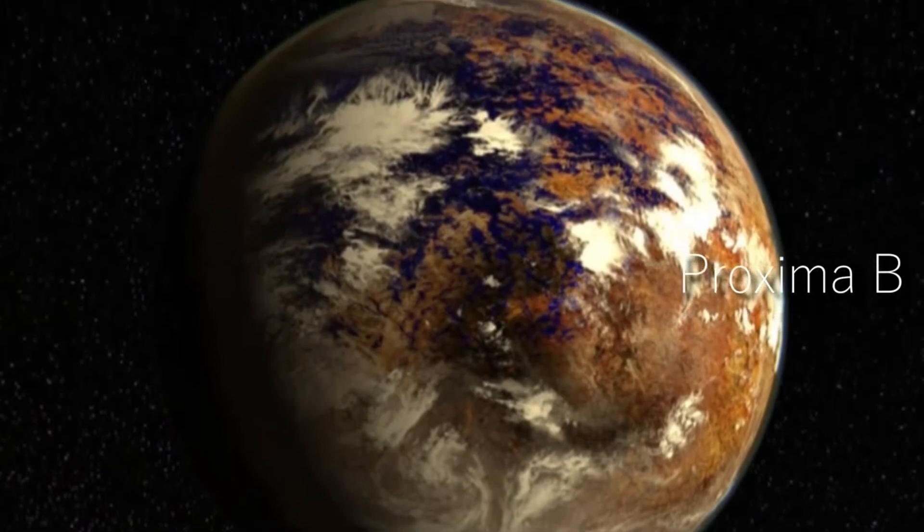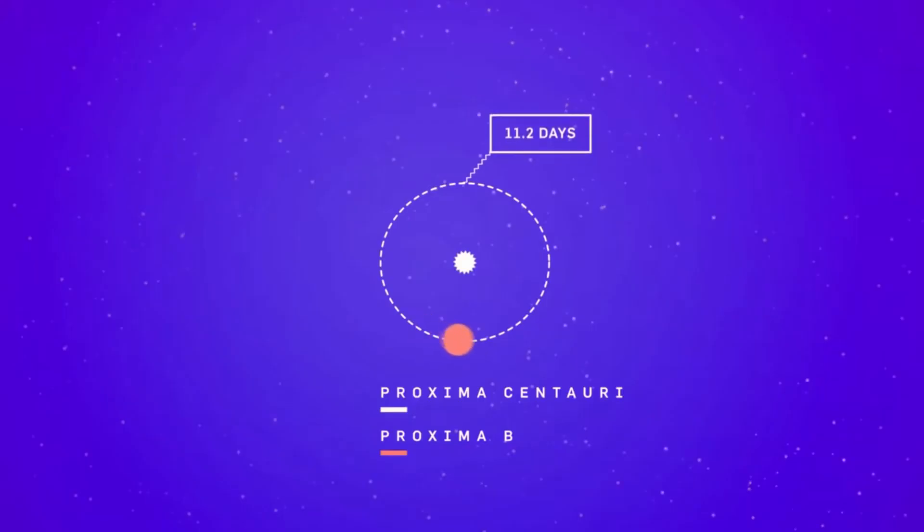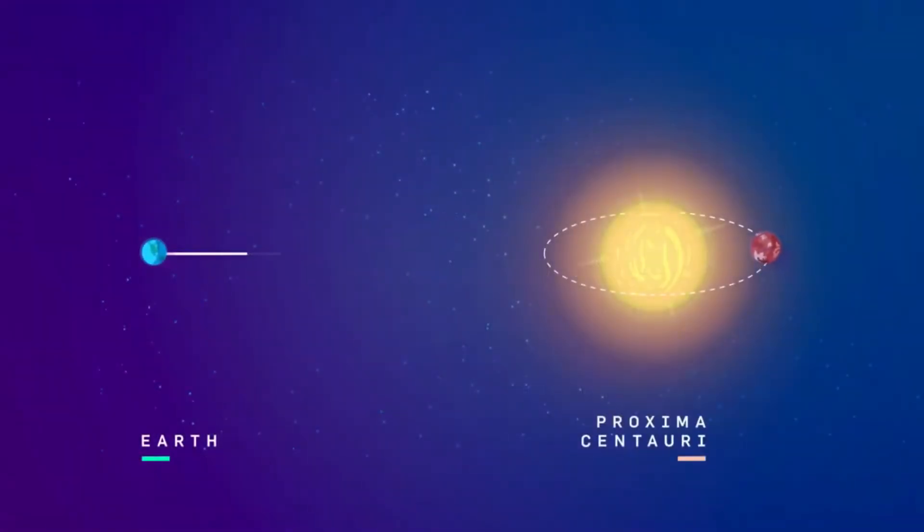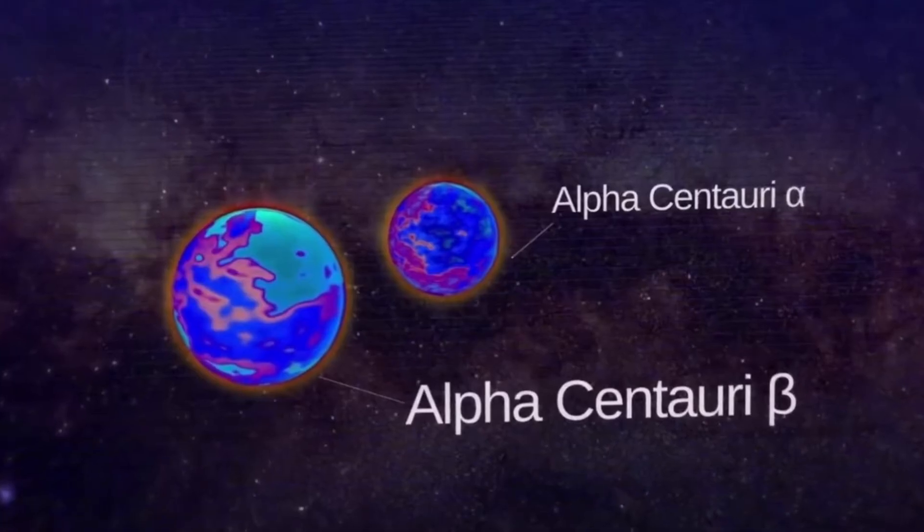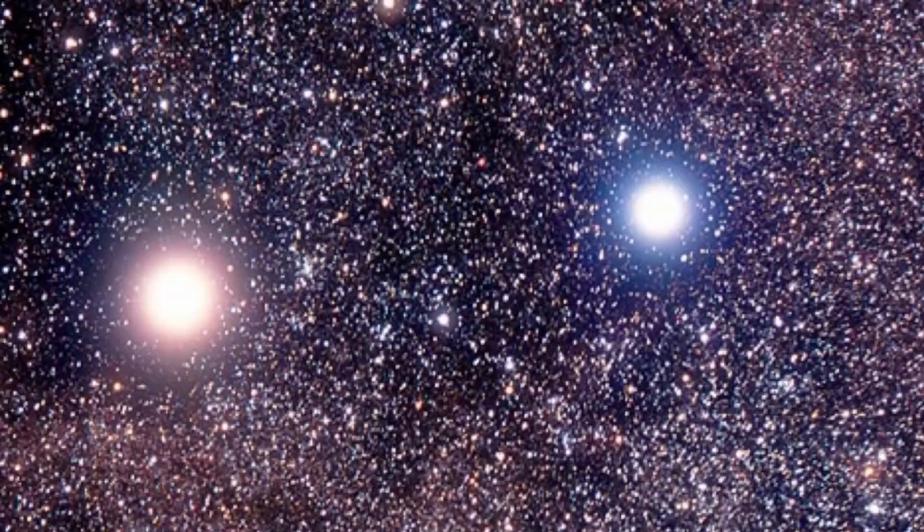The new planet is called Proxima Centauri b. Proxima b orbits around Proxima Centauri, the closest stellar neighbor to our own Sun. Proxima Centauri is about 4.22 light-years from the Sun, while the twin stars of Alpha Centauri are about 4.37 light-years away.